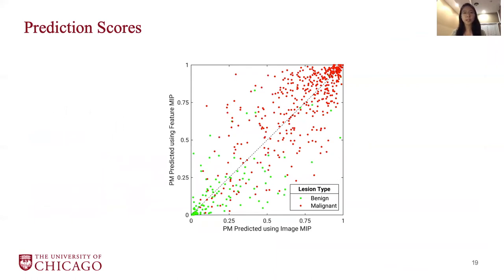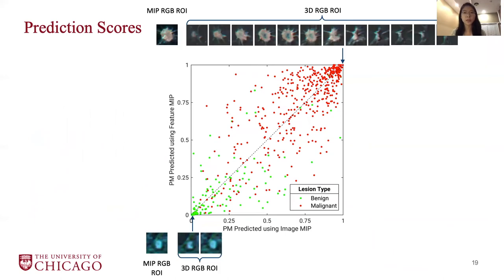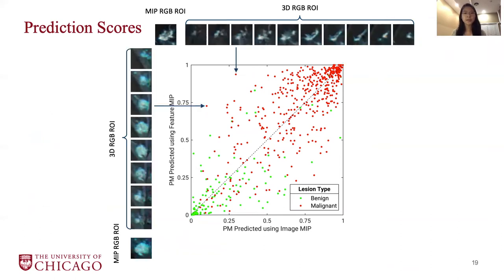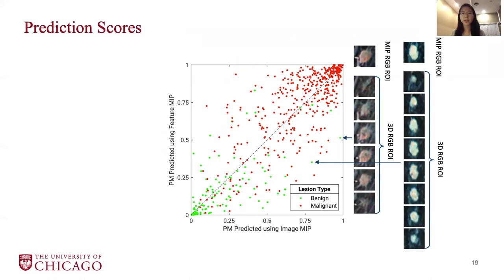We observed moderate disagreement between the two methods. Showing example ROIs — both the MIP RGB ROI and the 3D RGB ROI slice by slice — in two cases both methods predicted very accurately and agreed with each other. However, in two cancer cases, the MIP ROI failed to retain some important malignant features of the lesion in the projection process, so the feature MIP method predicted much more accurately. In two benign cases, the MIP ROI captured some misleading features that made the lesion appear more malignant, but were not accurate representations of the lesion volumes, and again the feature MIP method predicted better.